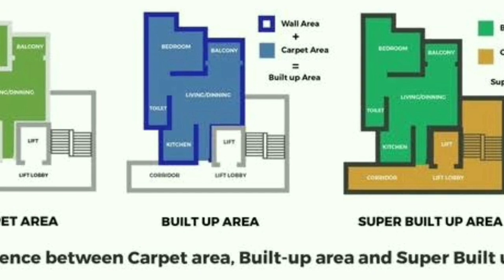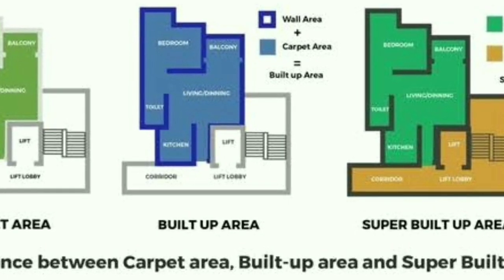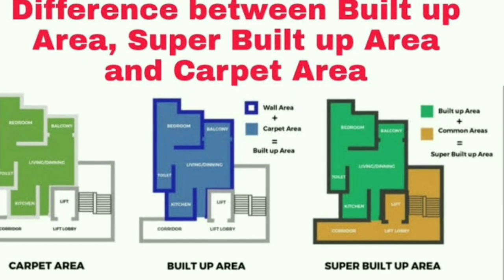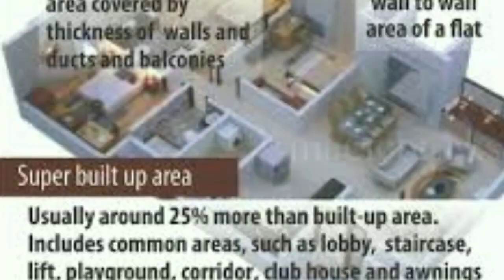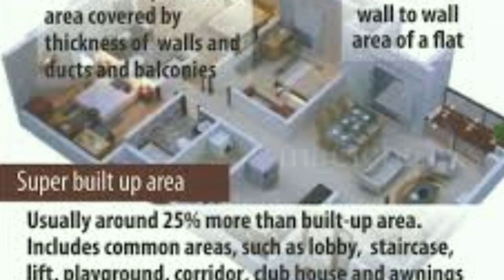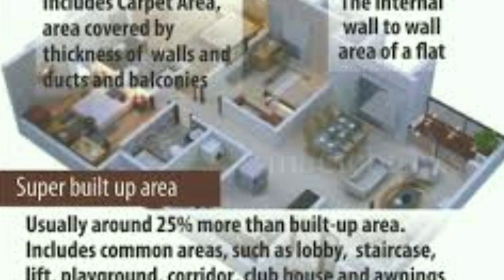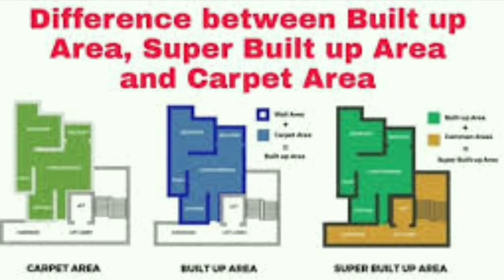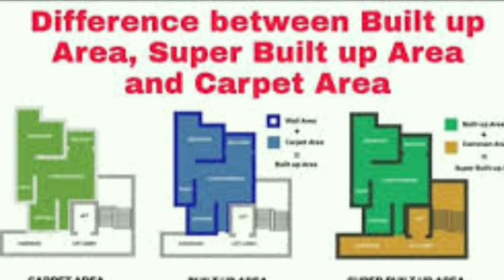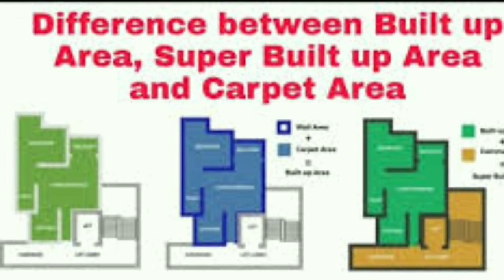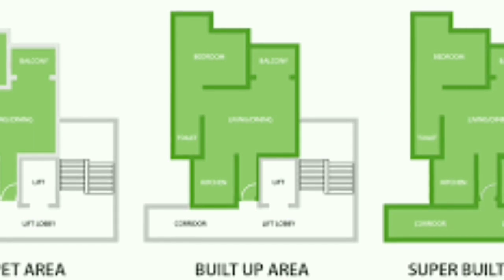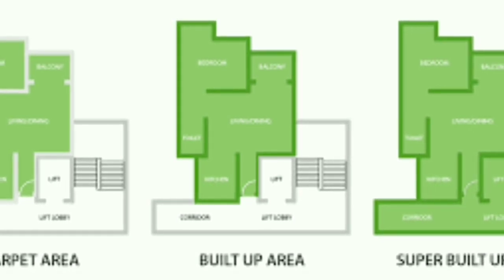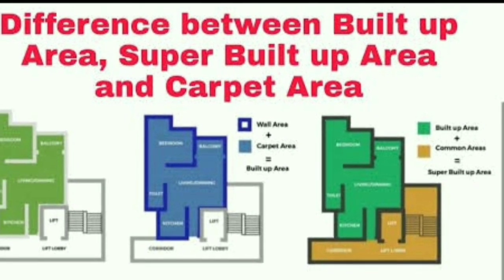In addition to built-up area, we also introduce the super built-up area. The formula is: super built-up area equals setback area plus built-up area plus 20% common area. The common areas included in the super built-up area are things like swimming pools, staircases, and lifts. Builders add 20% of total cost of an apartment to the super built-up area, which includes swimming pools, staircases, lifts, and open areas.